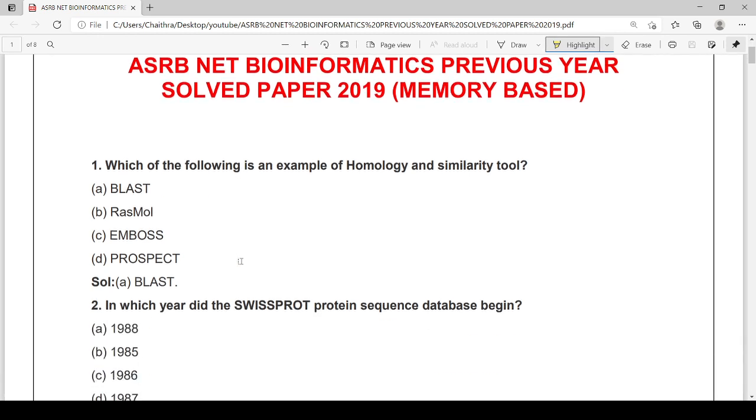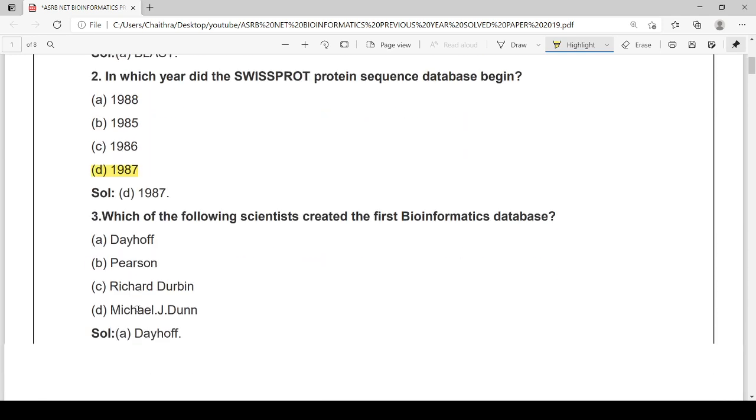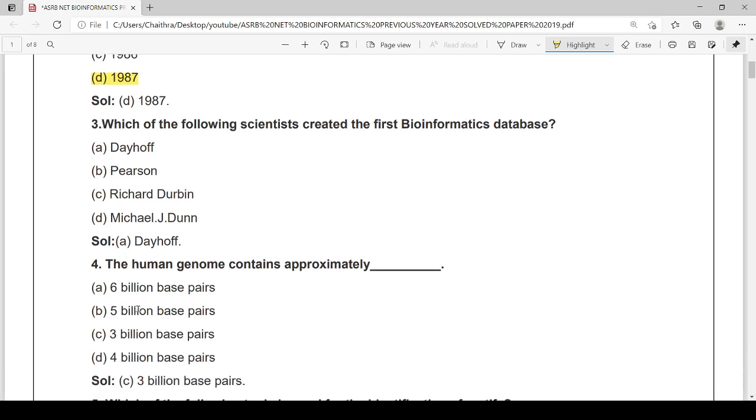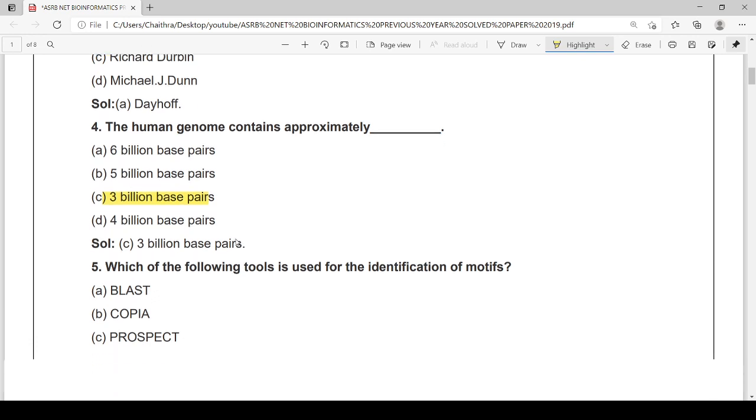Which of the following is an example of homology and similarity tool? It is BLAST, option A. In which year did the Swiss-Prot protein sequence database begin? It is 1987. Which of the following scientists created the first bioinformatics database? Option A, Dayhoff started. The human genome contains approximately 3 billion base pairs, just remember.